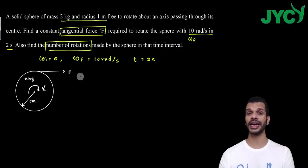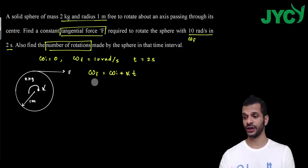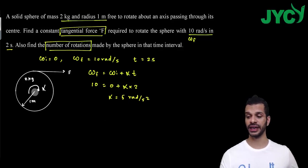Angular acceleration is equal to initial angular velocity plus alpha into t. Now final angular velocity is 10, this is 0. Alpha into time is 2 seconds, so basically alpha value is 5 radian per second square.